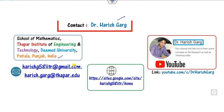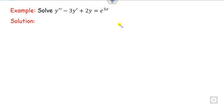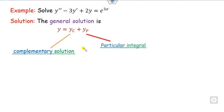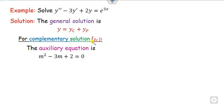I am Dr. Agar, working in the School of Mathematics, Thapar Institute. You can follow the link to find various videos on differential equations. Now let's see how to solve this. The right-hand side is non-zero and the coefficients are constants. The general solution is written as y = yc + yp. Let's first find the complementary solution.